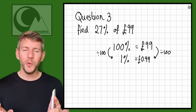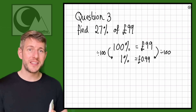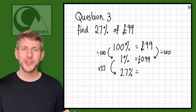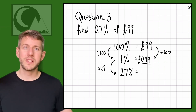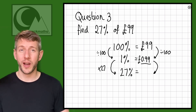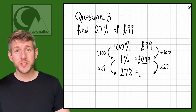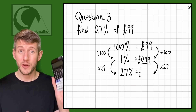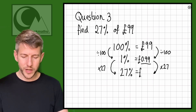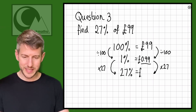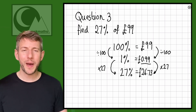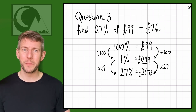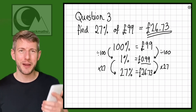Now we need to go to 27%. 1% times 27 equals 27%. Our 1% is £0.99, so 0.99 times 27 will give us 27% of £99. Working that out on the calculator: 27% of £99 is £26.73.